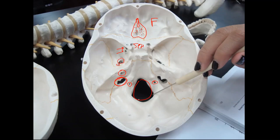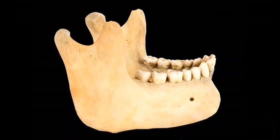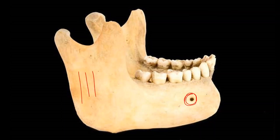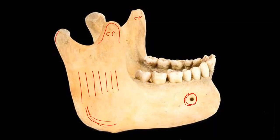Here we could talk about cerebellar fossae, where parts of the cerebellum fit into the skull. Got a mandible here. I see a mental foramen on the front. The mandibular foramen is obscured by this large arm of this bone called the ramus, and here's the angle down here. The front part of the top is called the coronoid process; the back one is the mandibular condyle — that's the one forming the temporomandibular joint where it sticks into the temporal bone. In between here is usually just referred to as the mandibular notch.